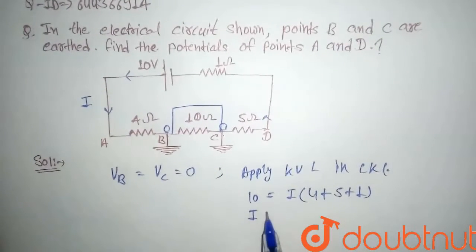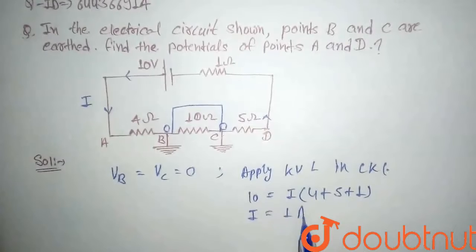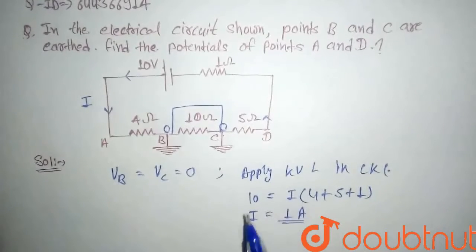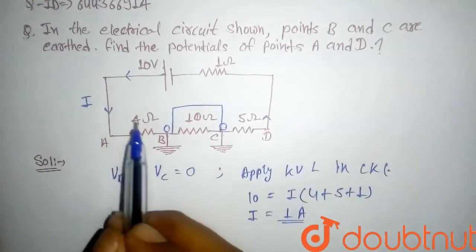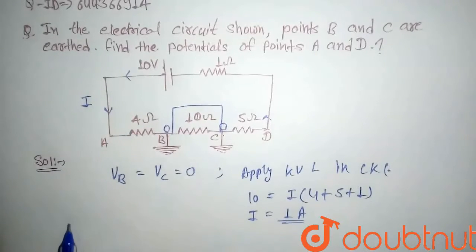So after calculating, the current comes out 1 ampere. So current flowing through the circuit is 1 ampere. Current through 4 ohm resistor will be also 1 ampere.